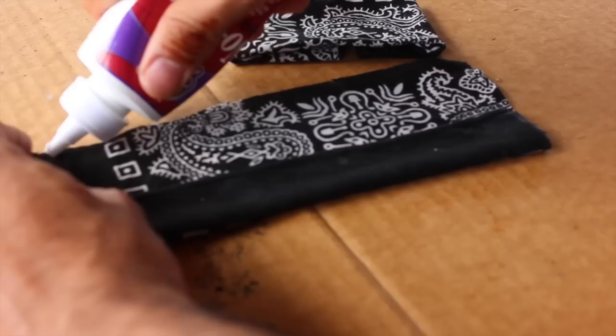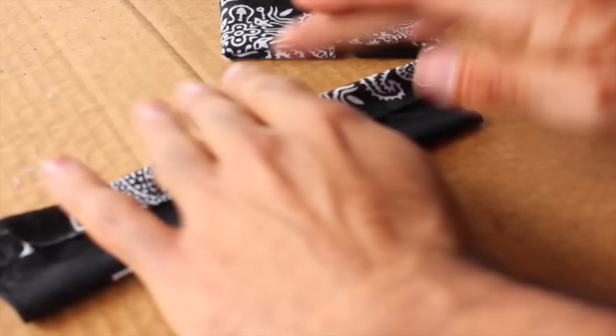So, like we did with the middle part, fold the top and the bottom of your bandana pieces into the middle, and then fold it like so.